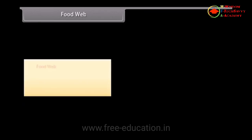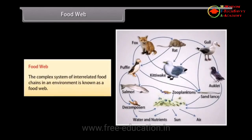Food Web: The complex system of interrelated food chains in an environment is known as a food web.